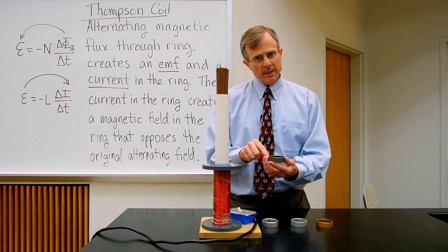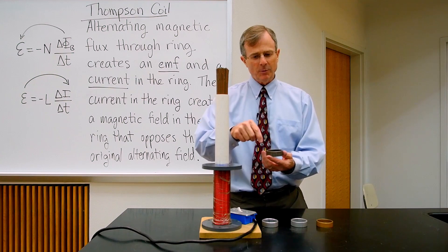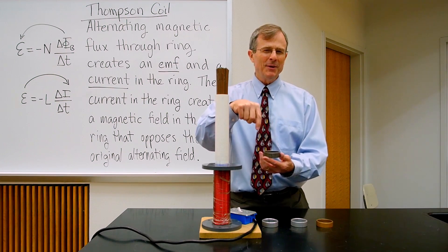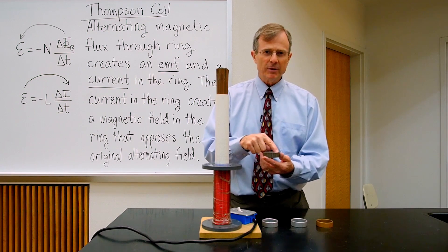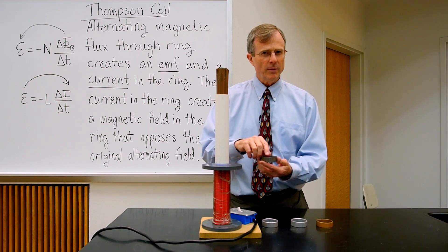A current in a ring, if you think back to the third grade, when you wound a wire around a nail and magnetize the nail, any time you have a current in a ring, you create a magnetic field in the ring.